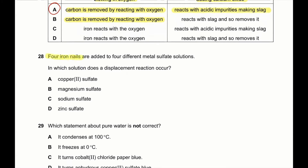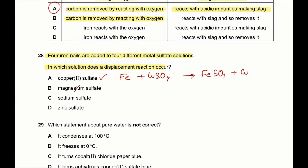Question 28: four iron nails are added to four different metal sulfate solutions — in which solution does a displacement reaction occur? Iron added to copper sulfate: copper is less reactive than iron, so a displacement reaction occurs forming iron sulfate and releasing copper. Magnesium, sodium, and zinc sulfates — magnesium and zinc are more reactive than iron, so iron cannot displace them. So 28, A is the correct answer.